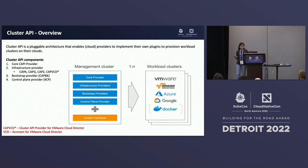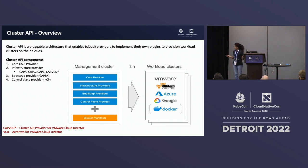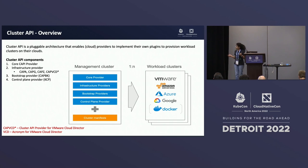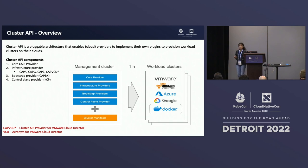That's the end user's point of view. Now let's see the developer's point of view. In simpler terms, Cluster API is comprised of one main component — the core CAPI provider — and three pluggable components: infrastructure provider, bootstrap provider, and control plane provider. All these providers have their own set of responsibilities and orchestration rules to adhere to, which are dictated by the core CAPI provider.